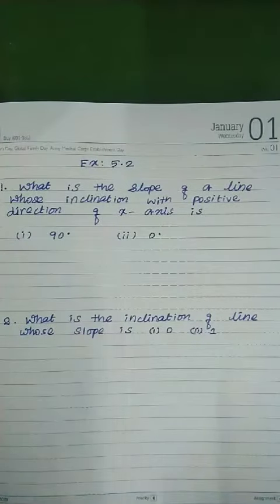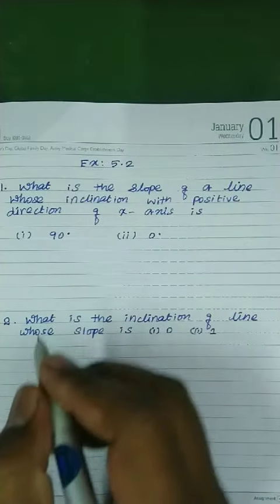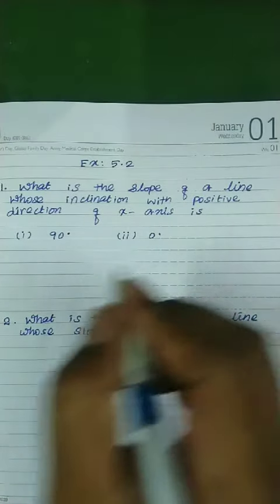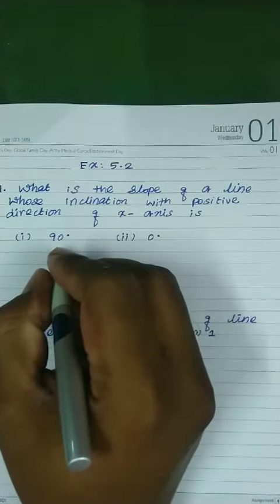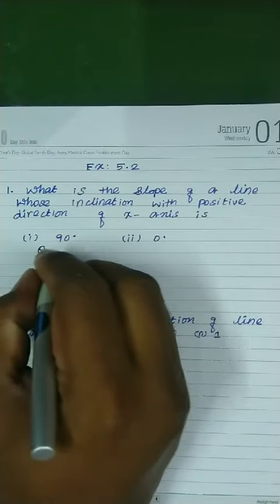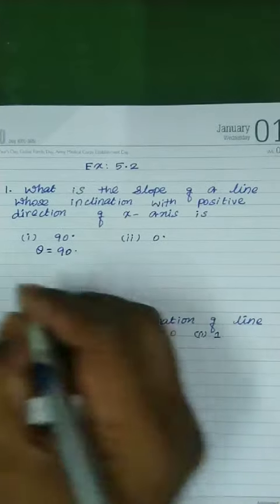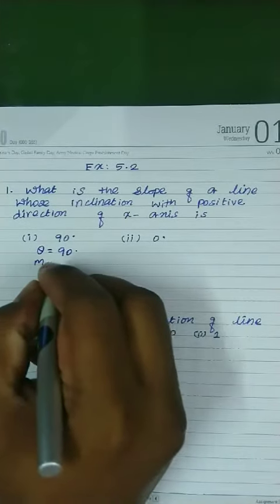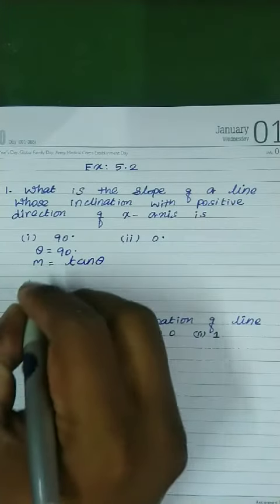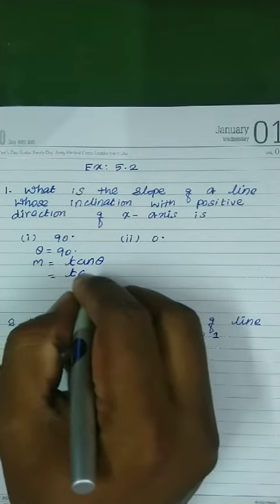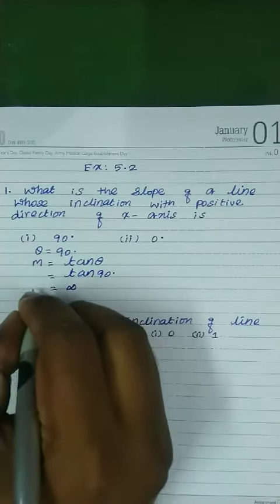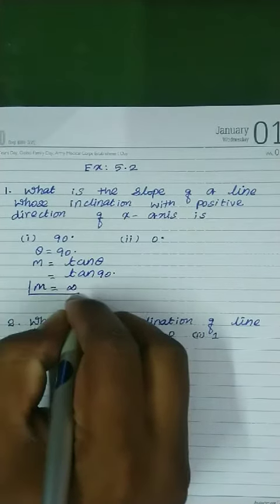XP 5.2. What is the slope of a line whose inclination with the positive direction of x-axis is given? They give angle of inclination. We want to find slope of a straight line. Theta equal to 90 degree. Slope equal to tan theta. m equal to tan. The value of theta is 90 degree. We know that tan 90 degree equal to infinity.